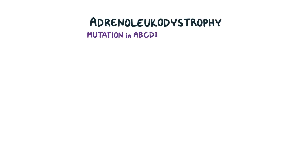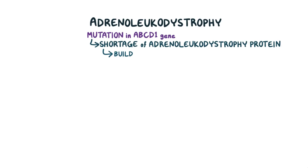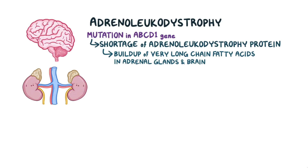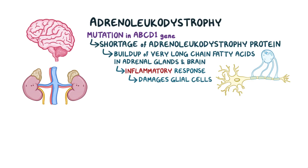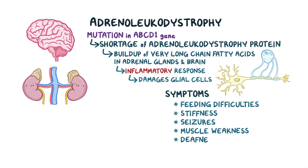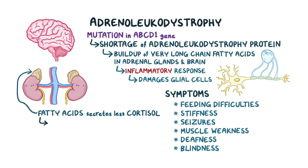Finally, there's adrenoleukodystrophy, which is caused by a mutation in the ABCD1 gene, resulting in a shortage of adrenoleukodystrophy protein. That leads to a buildup of very long-chain fatty acids, which accumulate in the adrenal glands and the brain. These very long-chain fatty acids trigger an inflammatory response, which damages the glial cells in the central and peripheral nervous systems. Like the other leukodystrophies, this leads to symptoms like feeding difficulties, stiffness, seizures, muscle weakness, deafness, and blindness. The fatty acids also collect inside the adrenal glands, causing them to secrete less hormones like cortisol, and causes symptoms of Addison's disease like vomiting, weight loss, and skin changes.